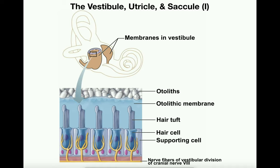In the past few videos we've been talking about parts of the inner ear such as the cochlea and how that relates to hearing. Hearing is one half of the inner ear's function. The other half has to do with balance and equilibrium — that's called vestibular sensation. There are two main parts: the vestibule, and the semicircular canals, which we'll discuss in the next video.